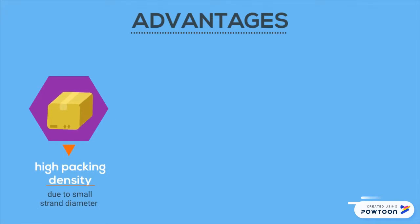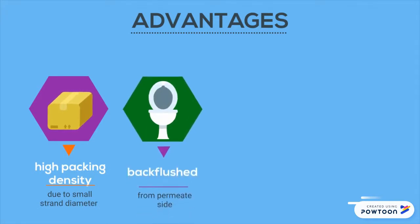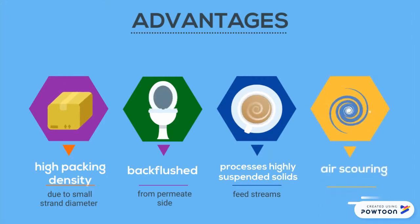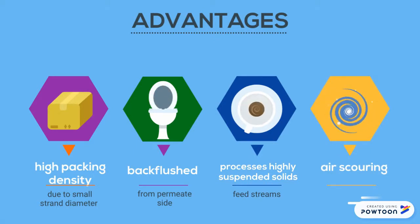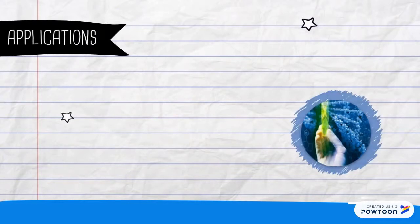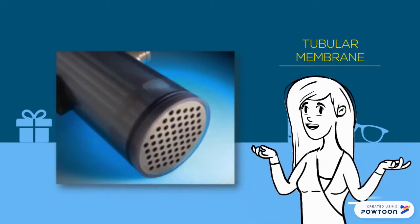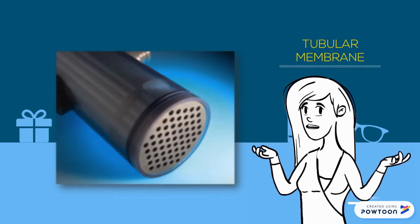Advantages of hollow fiber membranes include a very high packing density due to the small strand diameter, and the flexibility of the strands allows specific filter configurations not achievable in other filtration configurations. They can also be back-flushed from the permeate side and air-scoured, and can process feed streams with highly suspended solid particles. Common applications include reverse osmosis pretreatment, wastewater treatment, food and juice production, and biotech applications.